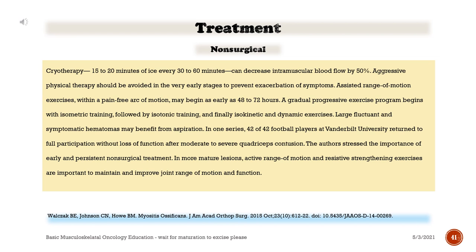Cryotherapy — 15 to 20 minutes of ice every 30 to 60 minutes — can decrease intramuscular blood flow by 50%. Aggressive physical therapy should be avoided in the very early stages to prevent exacerbation of symptoms. Assisted range of motion exercises within a pain-free arc of motion may begin as early as 48 to 72 hours. A gradual progressive exercise program begins with isometric training, followed by isotonic training, and finally isokinetic and dynamic exercises. Large fluctuant and symptomatic hematomas may benefit from aspiration. In more mature lesions, active range of motion and resistive strengthening exercises are important to maintain and improve joint range of motion and function.